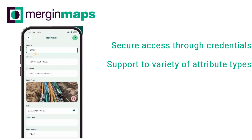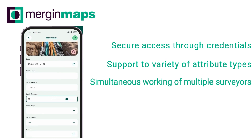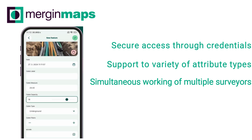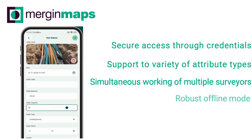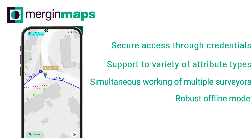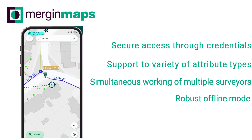Collaboration has never been so easy. Mergin Maps allows multiple users to work on the same project simultaneously, streamlining your workflow and enhancing team productivity. One of the standout features of Mergin Maps is its robust offline mode. Whether you are working in remote areas or places with unstable internet connections, Mergin Maps ensures your data collection is never interrupted. You can collect data offline and sync it once you are back online.